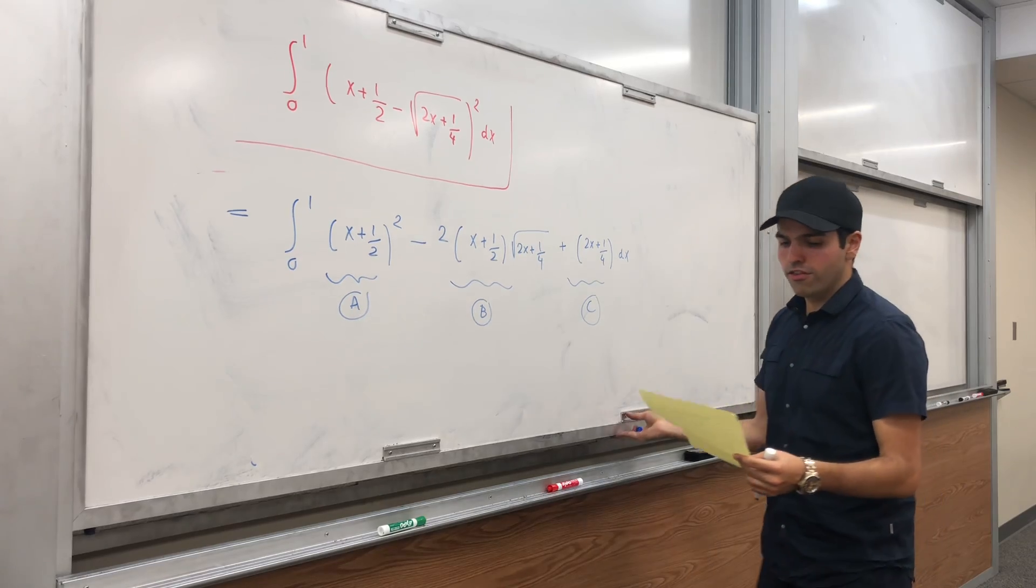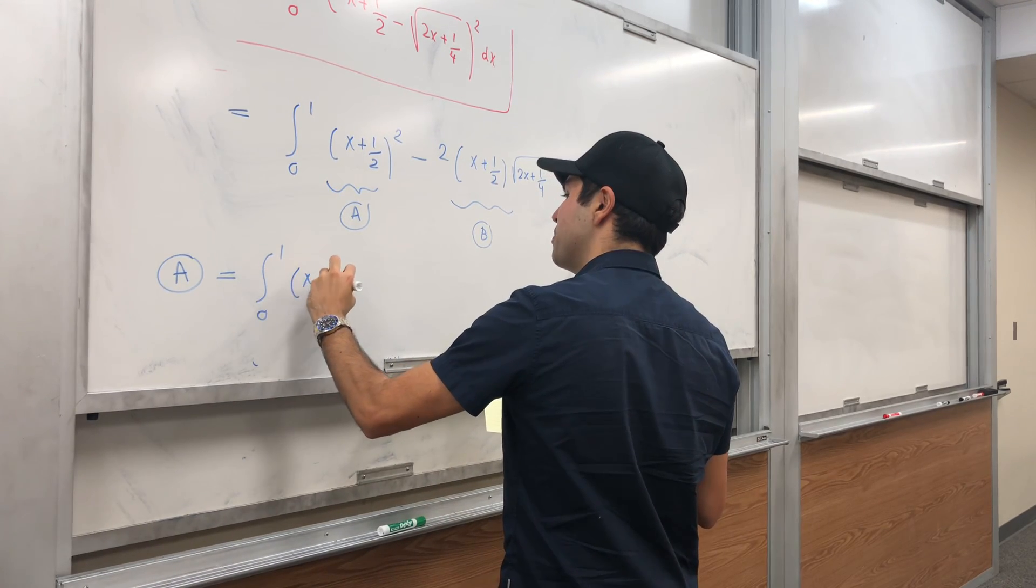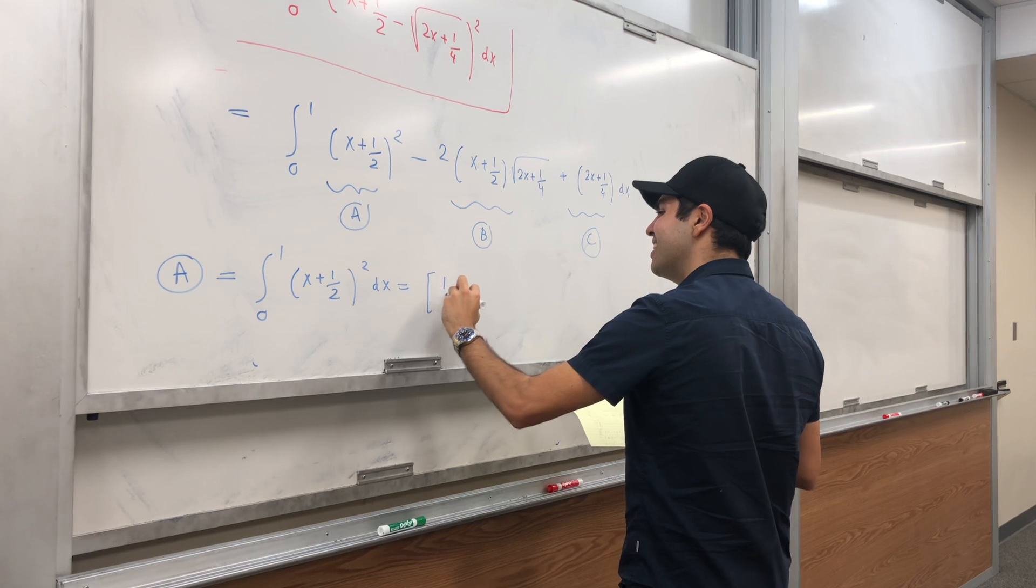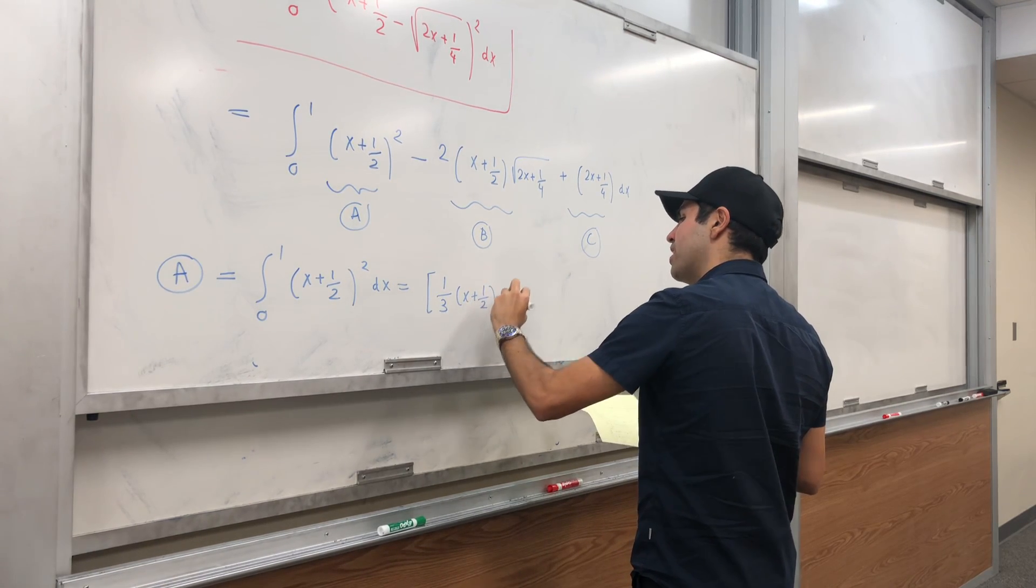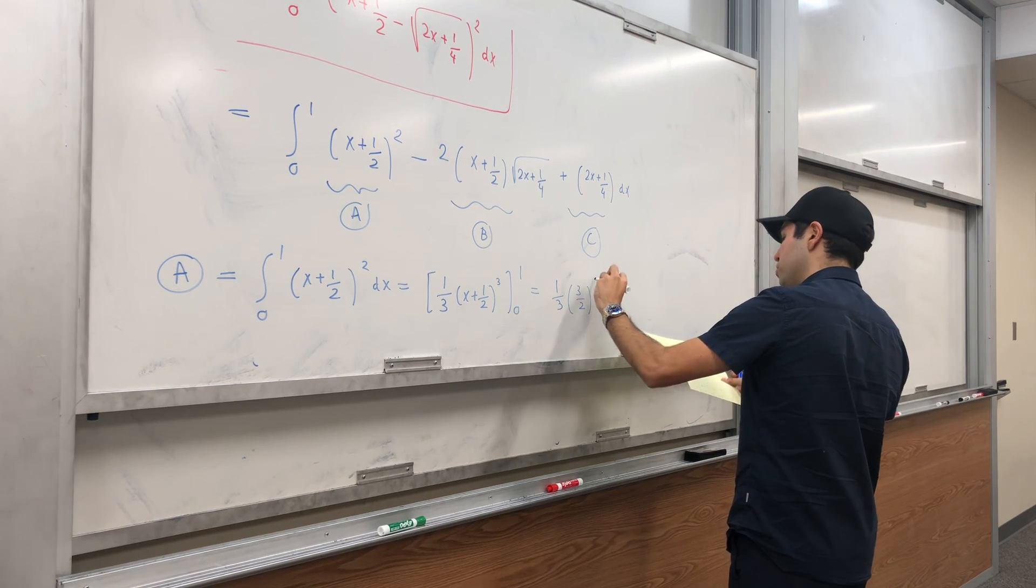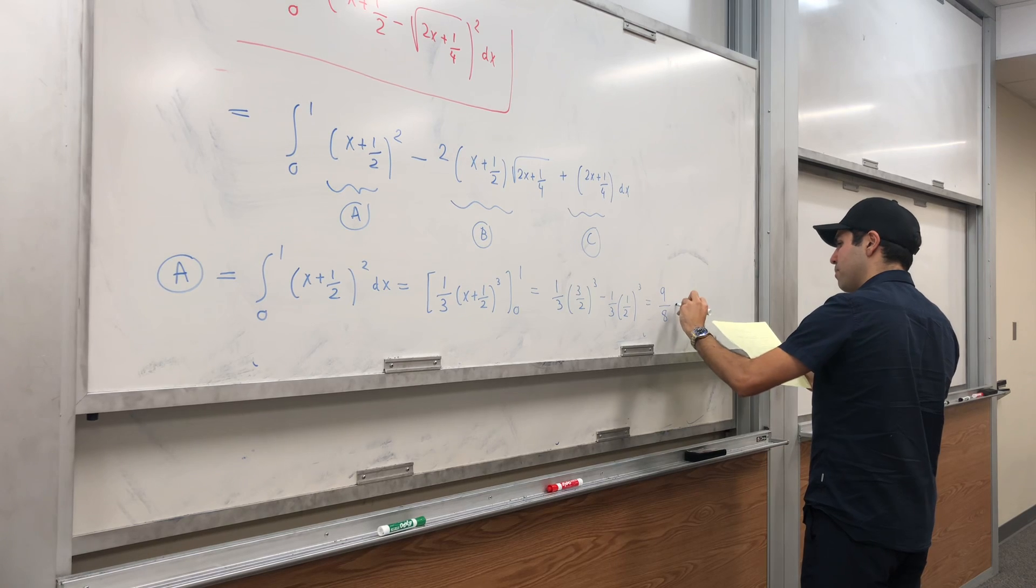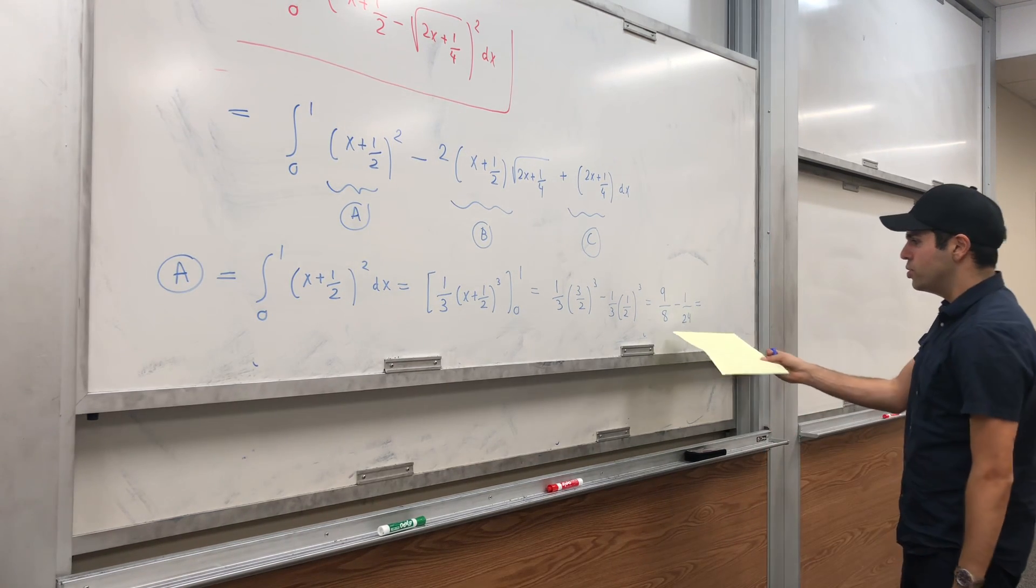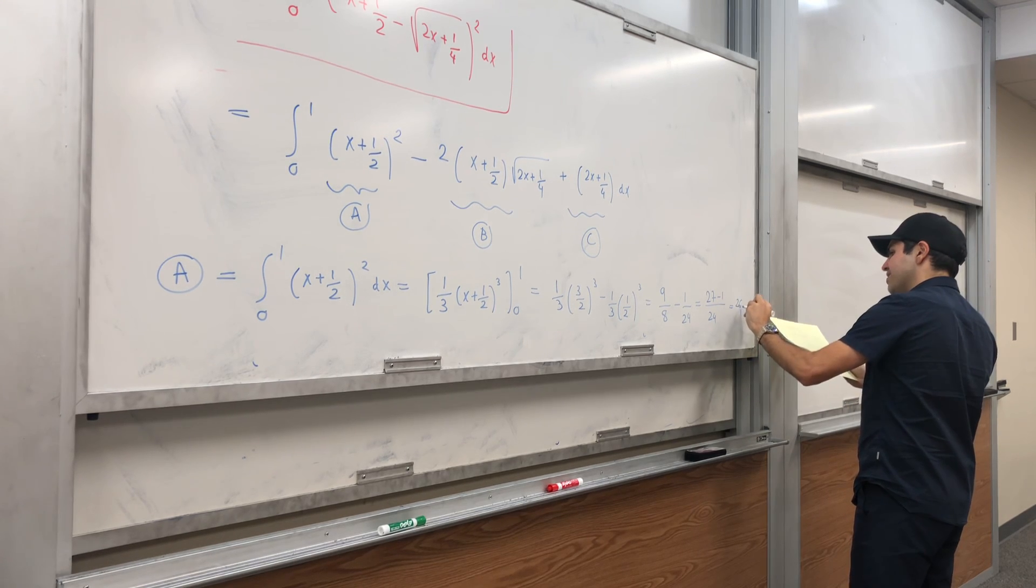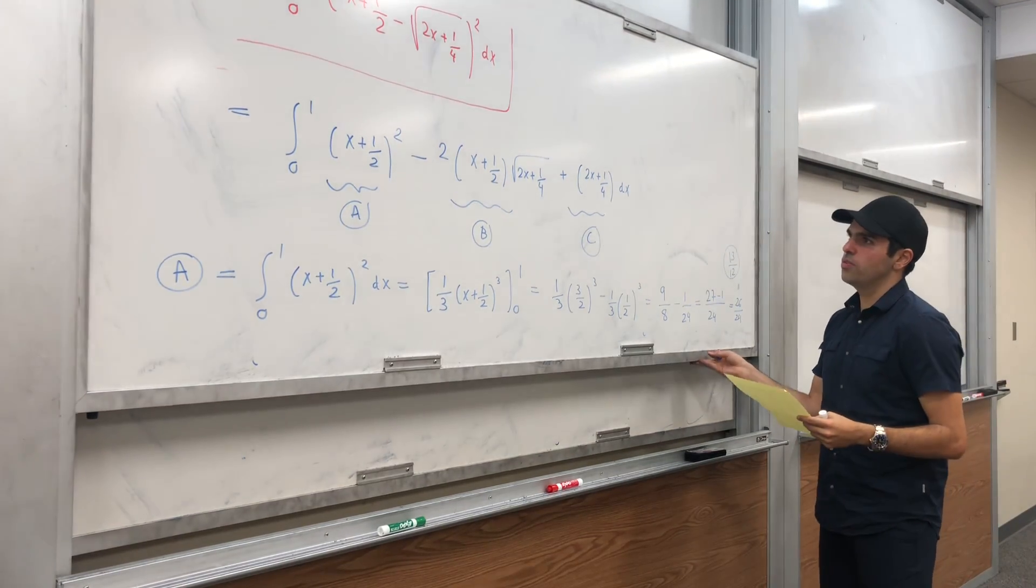So let's take the first part first. Integral from 0 to 1 of (x + 1/2)² dx. You can either use a u-substitution or do it directly. An antiderivative is 1/3(x + 1/2)³ from 0 to 1, which is 1/3 times (3/2)³ minus 1/3 times (1/2)³. That's 9/8 minus 1/24, and so to get from 8 to 24 you multiply by 3, so 27 minus 1 over 24, so 26/24, which is 13/12. So the first part is 13/12.